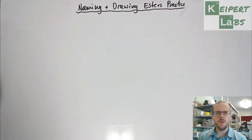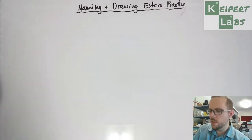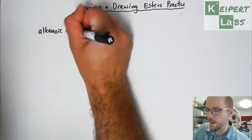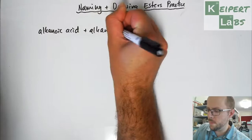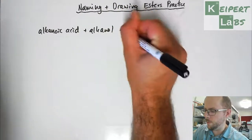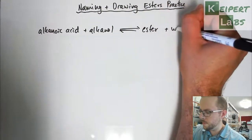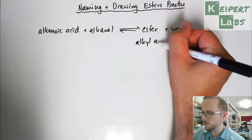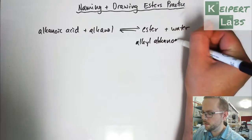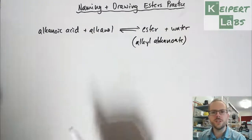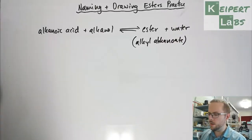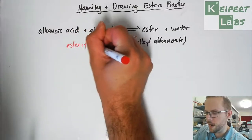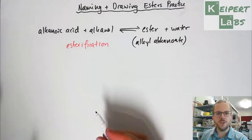In the previous video we met the concept of the ester — thinking that it's formed from when an alkanoic acid and an alkanol react together. In an equilibrium reaction we form an ester plus water. An ester, remember, is also perhaps more formally known as an alkanoate, although we will use the term ester. In a subsequent video we're going to go into this in more detail, but we would call this particular reaction esterification — the formation of an ester.